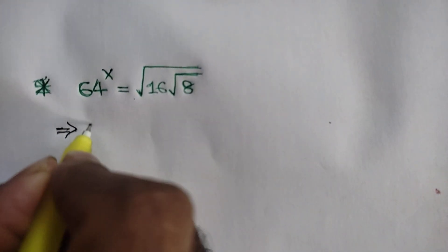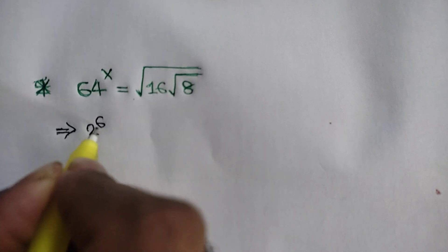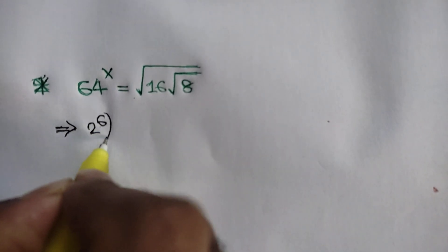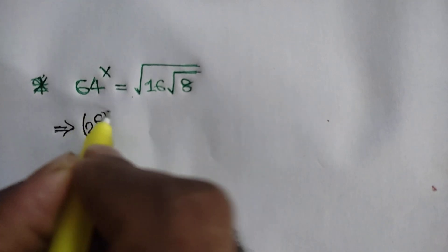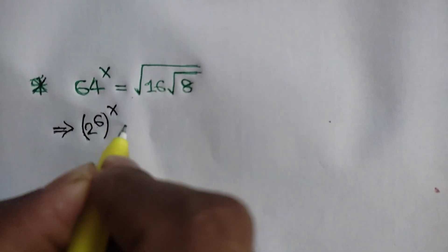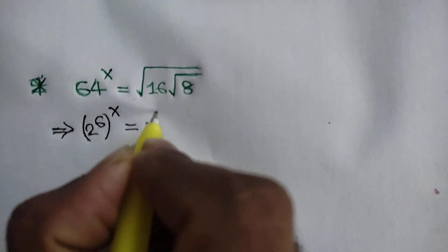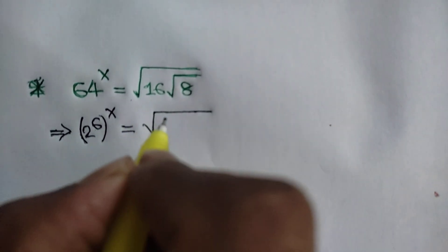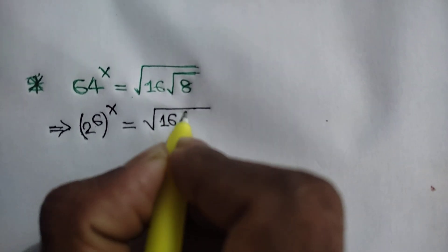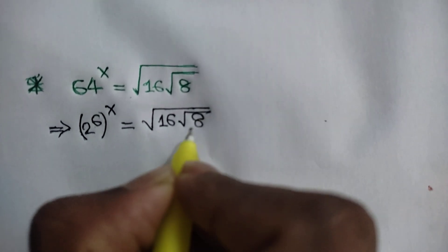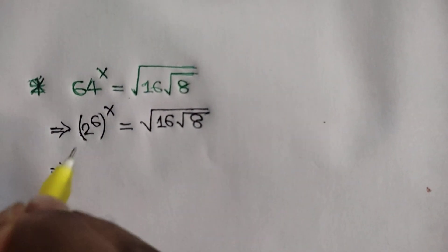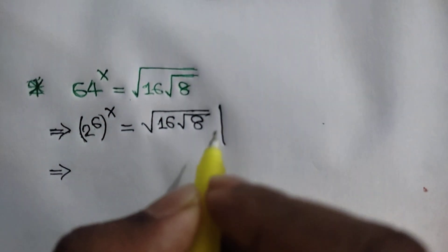Here we can write 2 to the power 6, because 2 to the power 6 is the same as 64. So we have 2 to the power 6 whole to the power x, equal to the square root of 16 times the square root of 8. Here we can apply this rule.